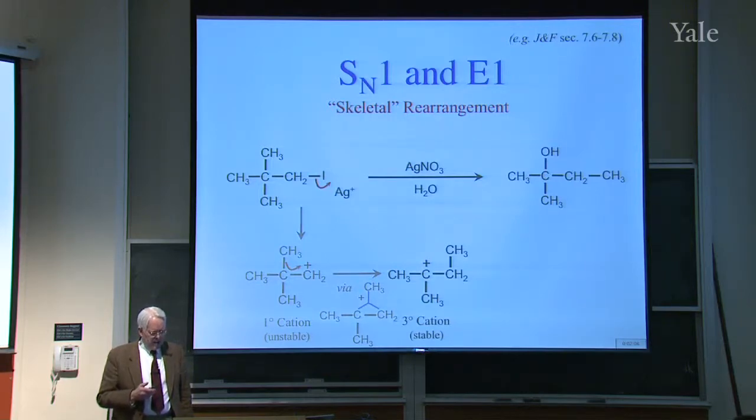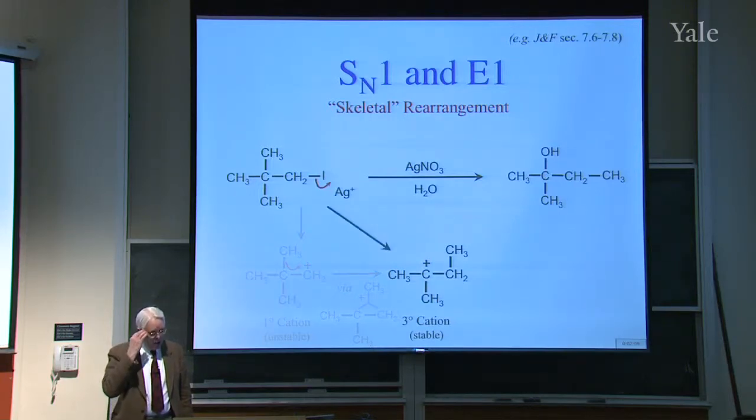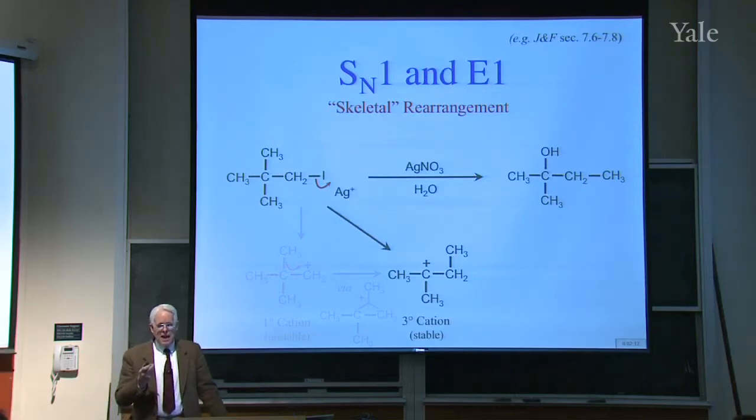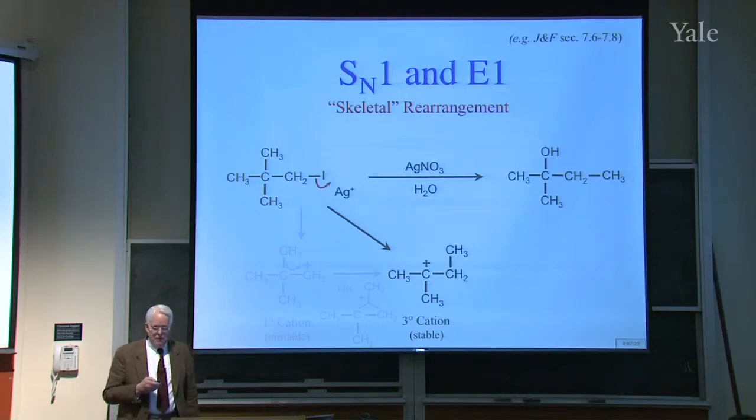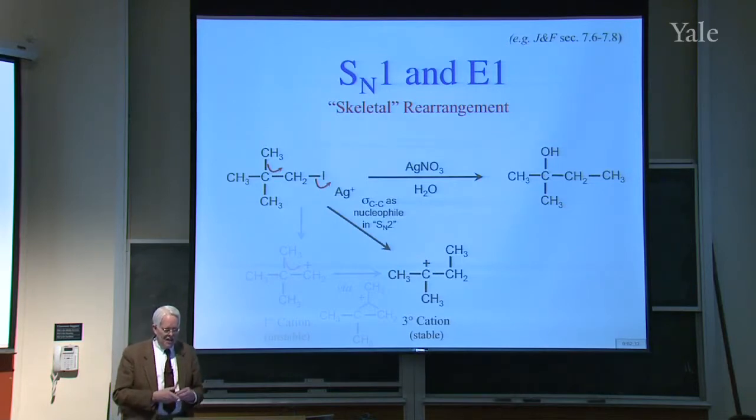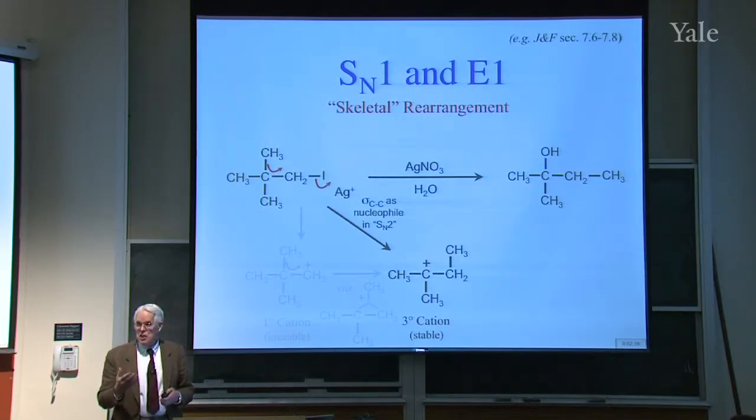It's possible that it doesn't even go that way, that at the same time the iodide is leaving and beginning to develop this unstable primary cation, the methyl next door shifts across so you directly get the cationic rearrangement product. Once you have the carbons rearranged like that, it's simple.